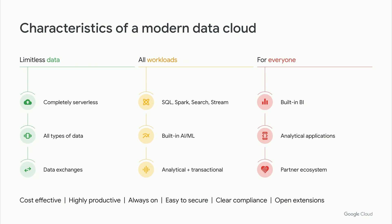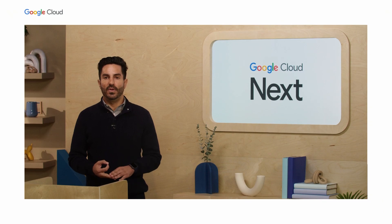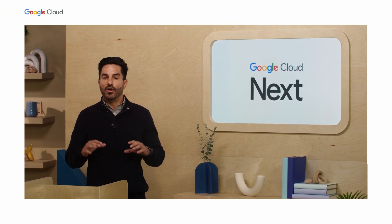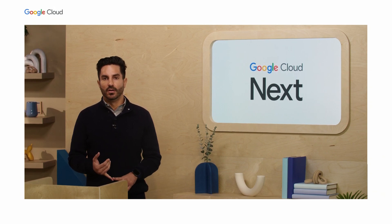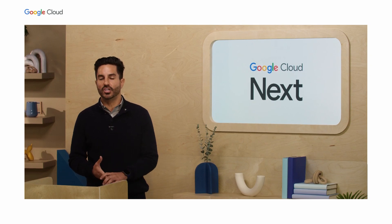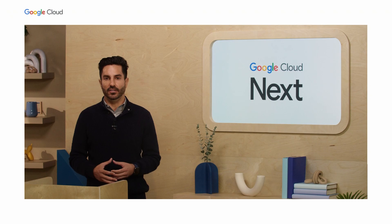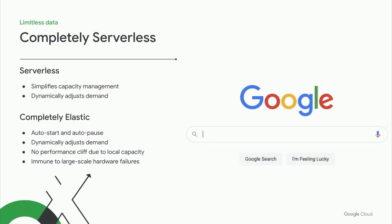Let's talk about what are the characteristics of a modern data cloud that will allow you to get value from all of your data across all workloads and impact everyone — done in a way that's highly efficient, security-focused, open, and compliant. It really starts with being serverless. Being truly serverless means you don't have to worry about hardware, clusters, VMs, or administration and optimization — you get to focus on adding business value. BigQuery's serverless architecture takes advantage of Google's technical infrastructure that has been used for over a decade to power Google's biggest websites and applications.